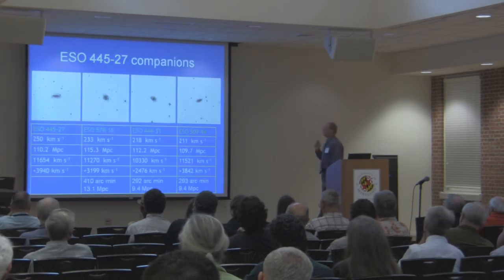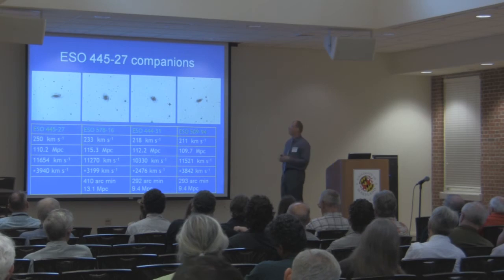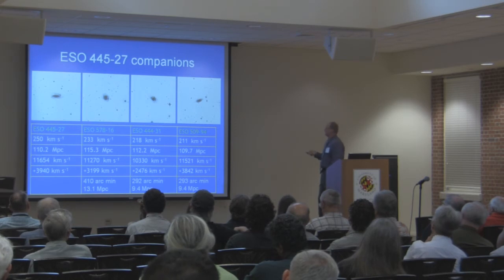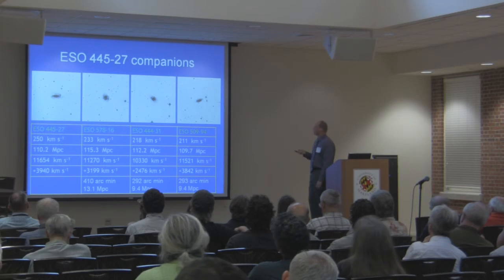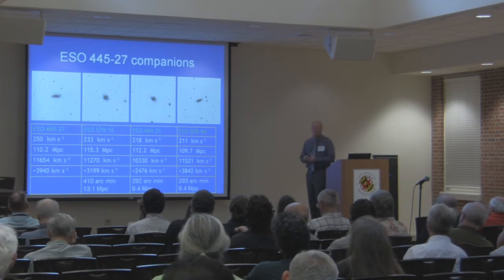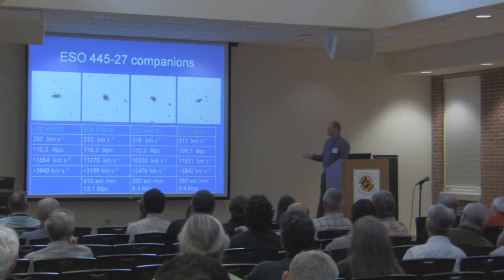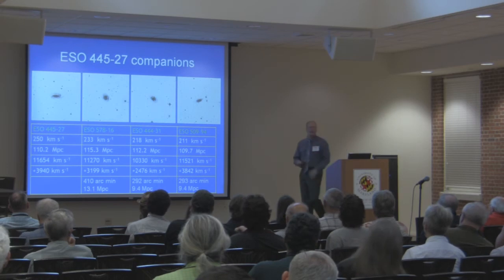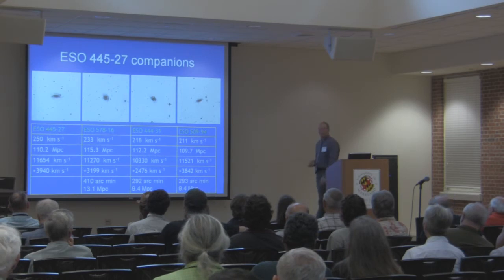This is one of my favorites because it has a really large deviation and a lot of evidence to support it. ESO 44527: its distance is 110 megaparsecs, its redshift velocity is 11,654 kilometers per second, leading to a deviation from Hubble's law of 3,940 kilometers per second — almost 4,000. The data for this galaxy is extremely good: very small uncertainty in rotational velocity, very small uncertainty in magnitude, and a nice flat rotation curve. I also looked for companion galaxies — if this galaxy has some kind of error and is an outlier in the Tully-Fisher law, it should be on its own. But here we have three other galaxies with similar redshifts and similar distances, all at about 110-115 megaparsecs. Looking at the images, they all show very similar resolution of arm structure — they all look very similar.